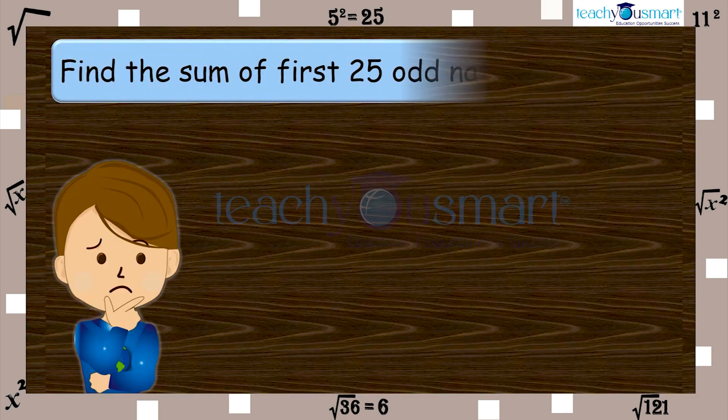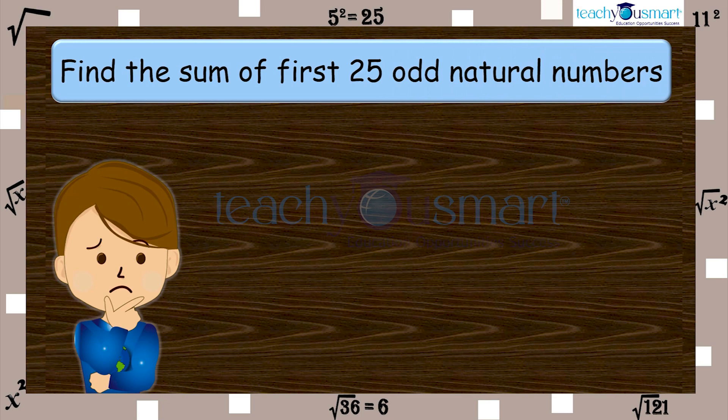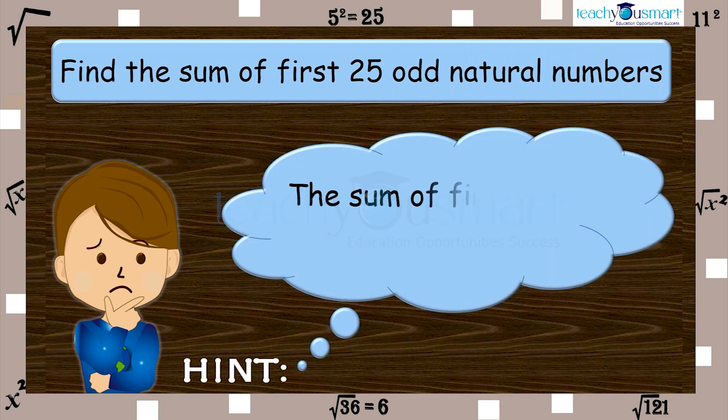Find the sum of the first 25 odd natural numbers. There's a hint: the sum of first n odd natural numbers is n square.